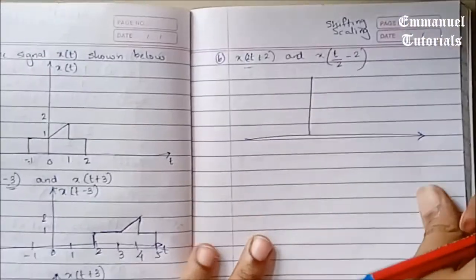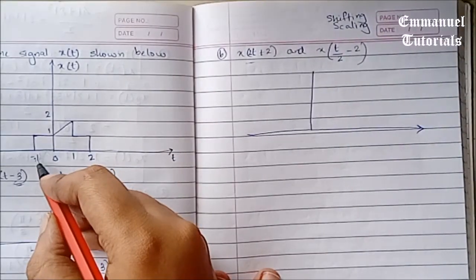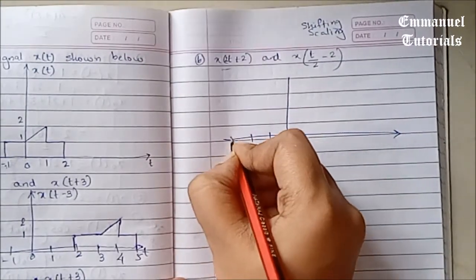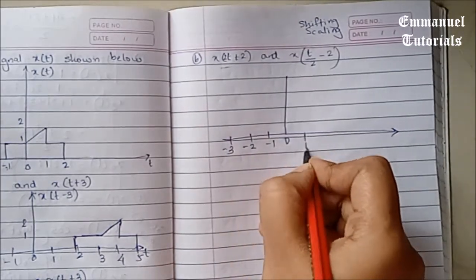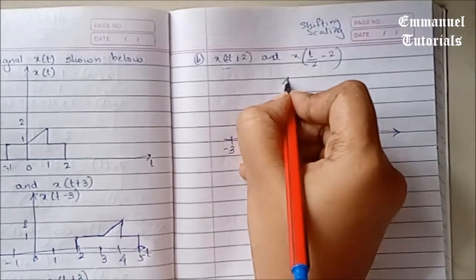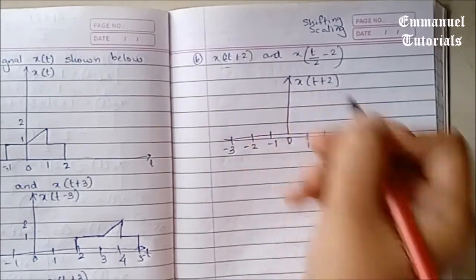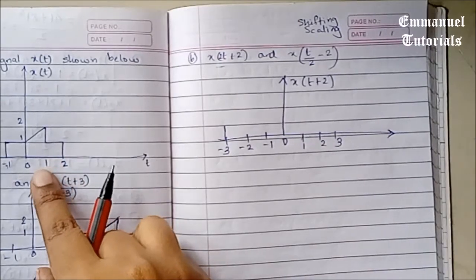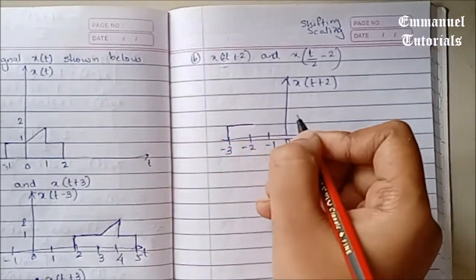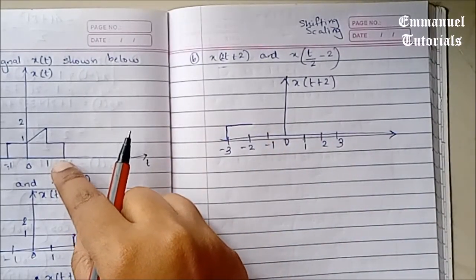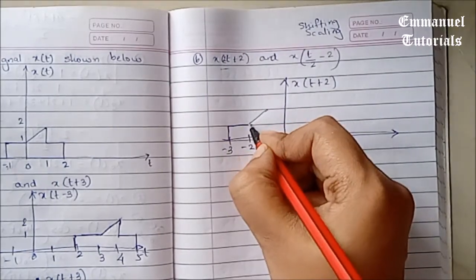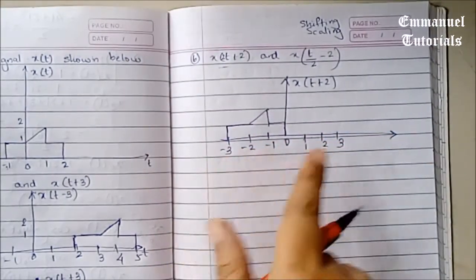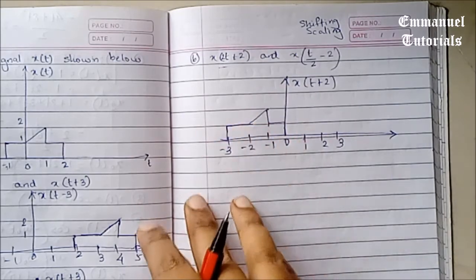Shifting to the left by 2 means the first point, at minus 1, will appear at minus 1 minus 2, that is minus 3. This is x of t plus 2. The second point at 0 will appear at 0 minus 2, which is minus 2. The point at 1 will appear at 1 minus 2, that is minus 1. And the point at 2 will appear at 2 minus 2, which is 0. So this is our signal in the advanced manner, shifted to the left by 2.